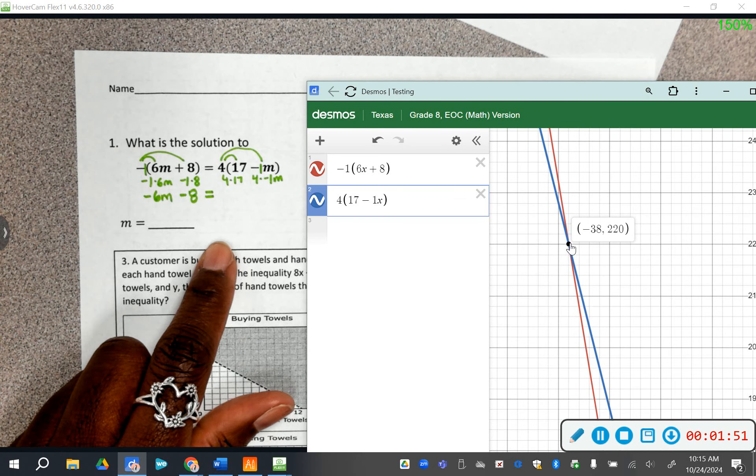Now remember, it's going to give you the full point, but all we care about is what do we change the m's to? We change them to X's, so the answer will be negative 38. You can do the same thing with this one, but be careful.